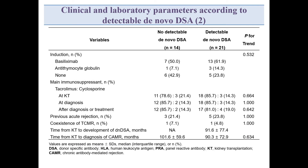There were no significant differences in the induction and maintenance immunosuppressive agents at kidney transplantation, diagnosis of CAMR, and after treatment; the proportion of previous acute rejection; coexistence of TCMR; time from kidney transplantation to development of de novo DSA; and time from kidney transplantation to diagnosis of CAMR between the two groups.